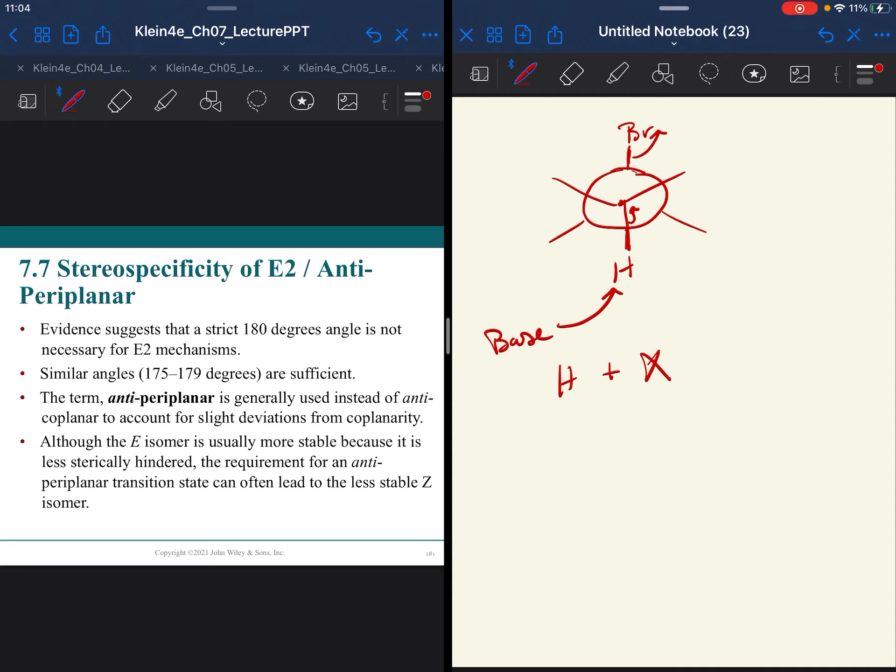Those electrons are falling in to make the double bond and the bromine is going to leave. The proton that is leaving and the halogen that is leaving need to be anti to one another. So think about those Newman projections. They need to be anti so that or they need to be fully eclipsed.